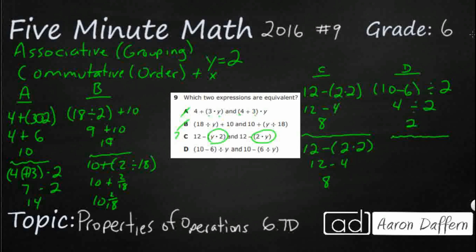And then they changed the grouping here. So now 10's on the outside minus 6 divided by 2. So 10 minus 6 divided by 2 is 3. So that makes 7. That is incorrect here.